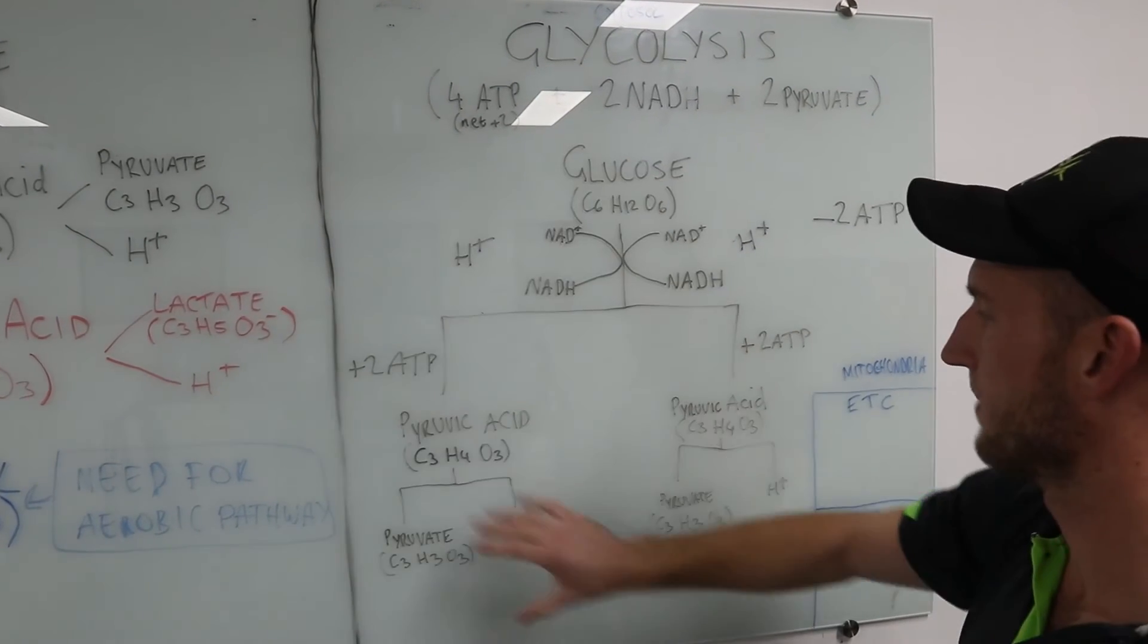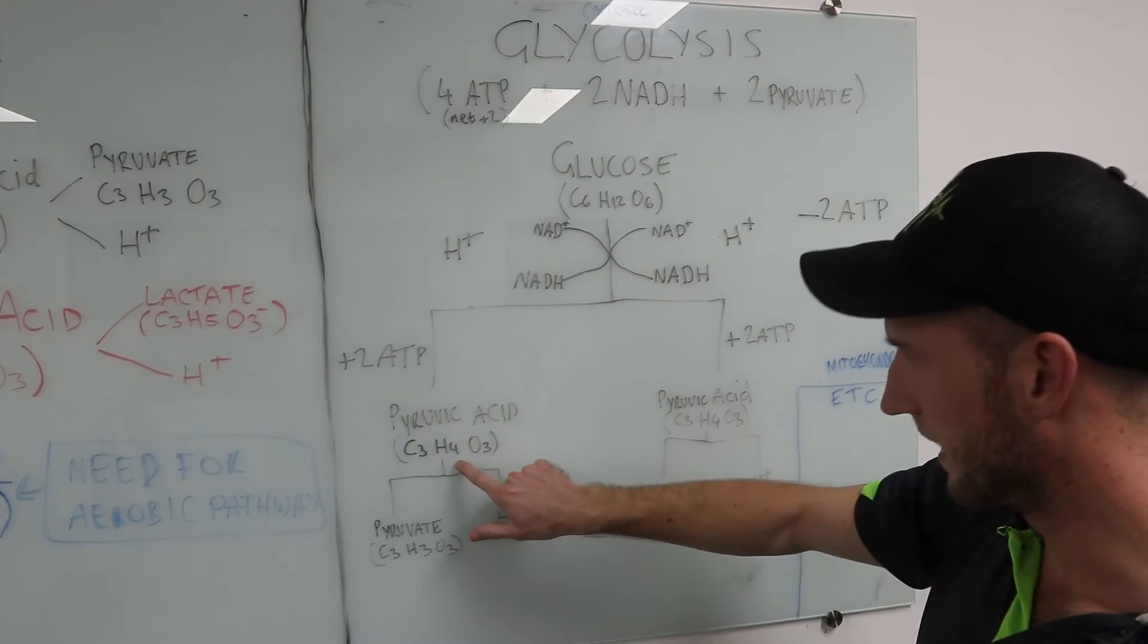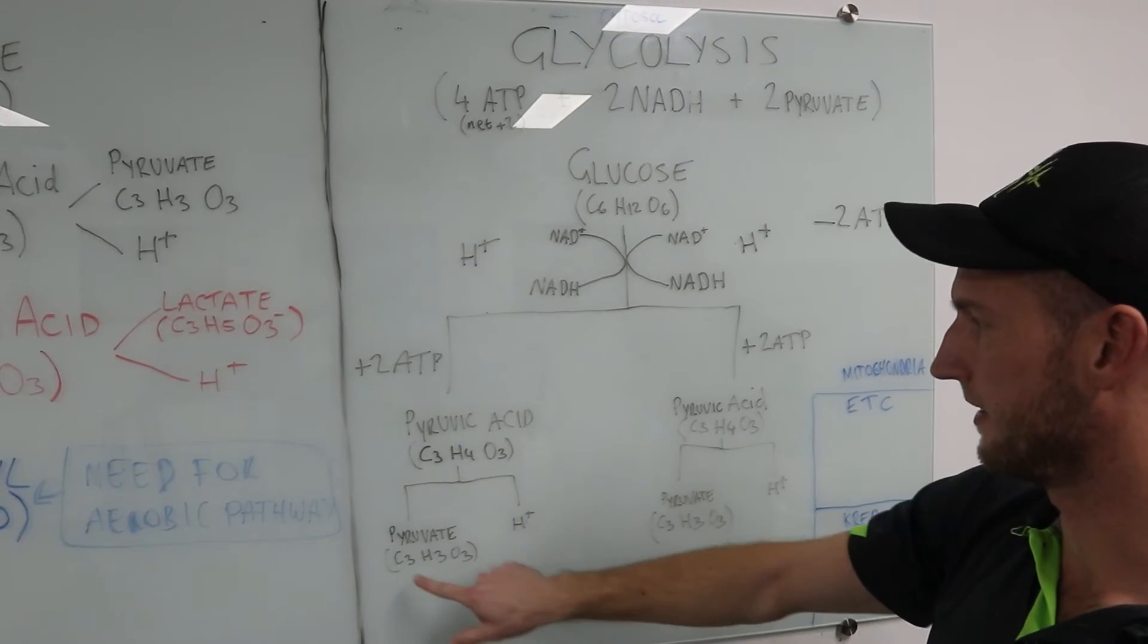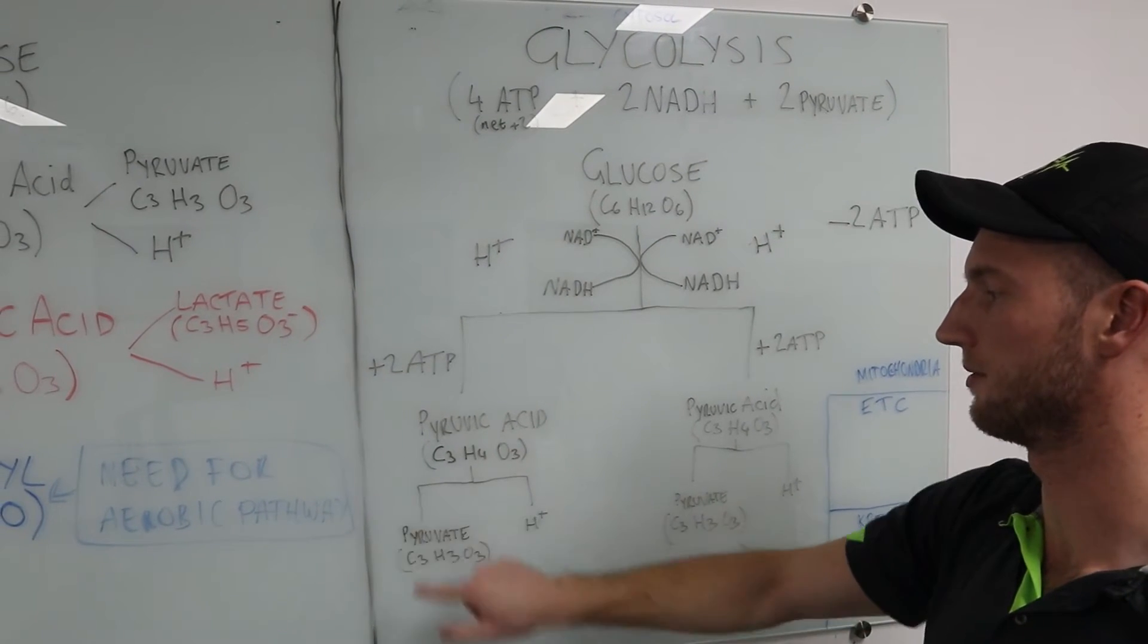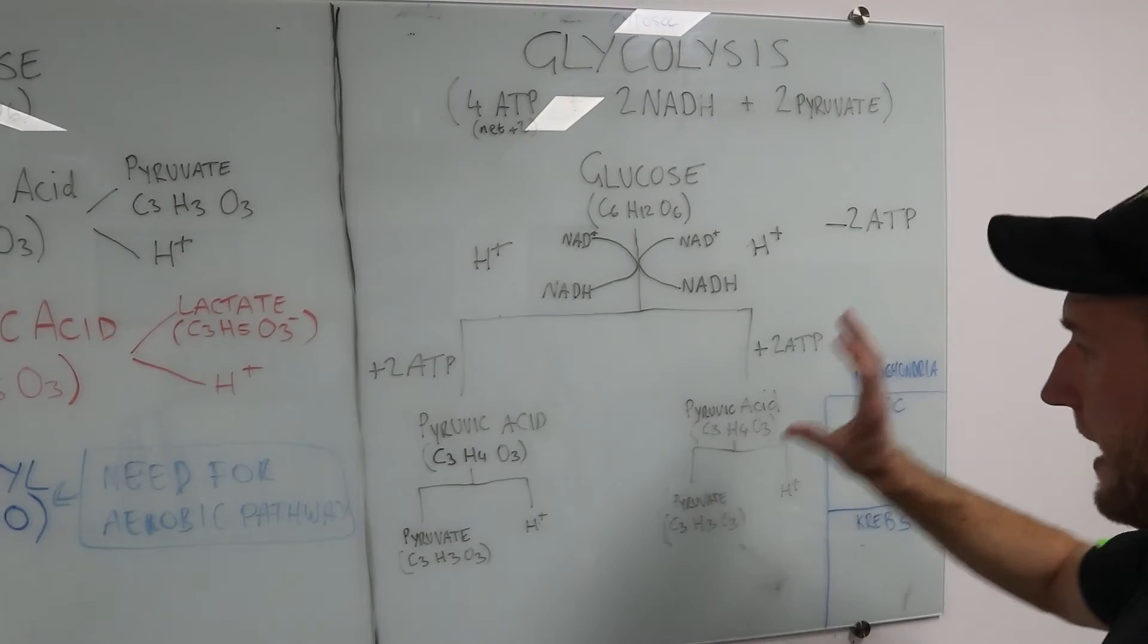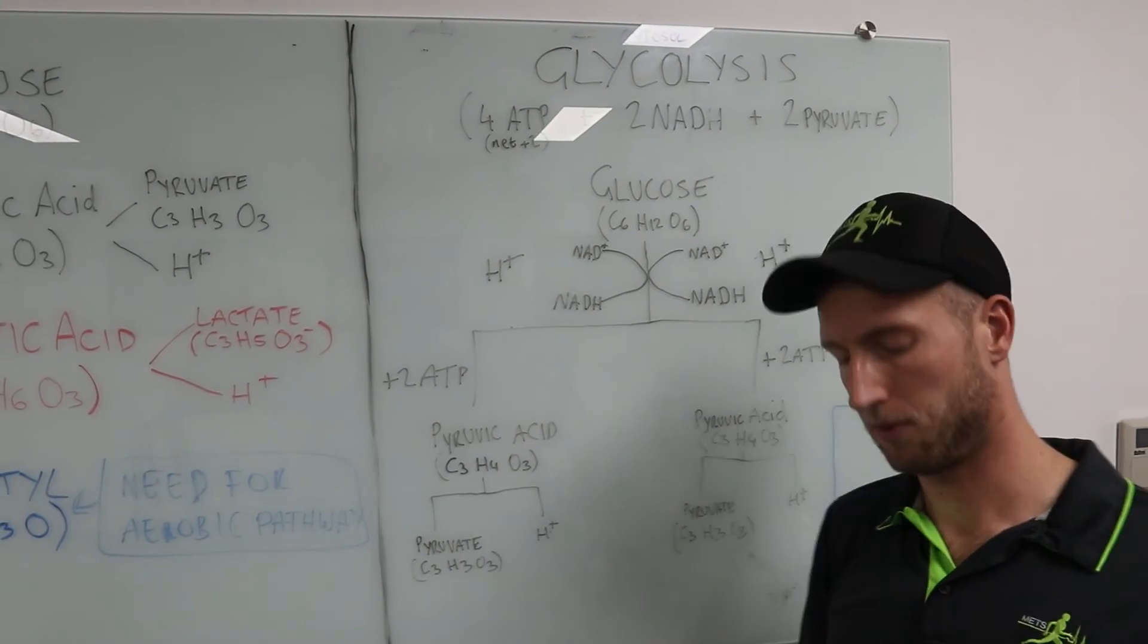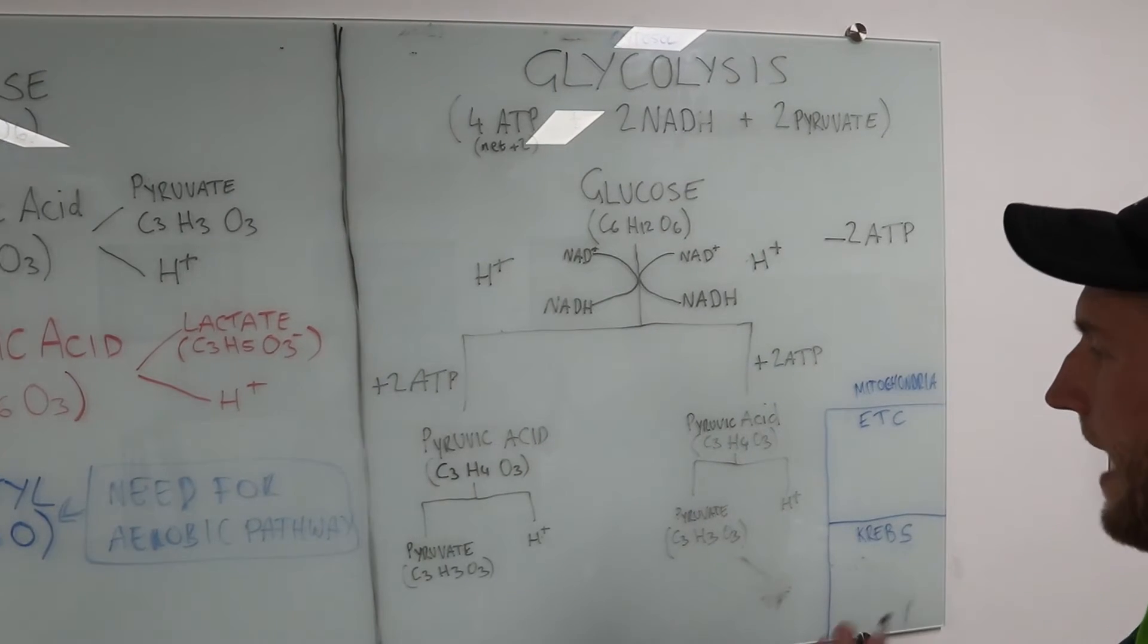All right let's get back down to here. We have pyruvic acid C3H4O3. All we have to do is break this down into pyruvate and hydrogen. So the difference between pyruvic acid and pyruvate is just one hydrogen. So we break that down. Same on the other side. Now from here we either go through an aerobic pathway or we go through an anaerobic pathway. I'm going to start with the anaerobic pathway.